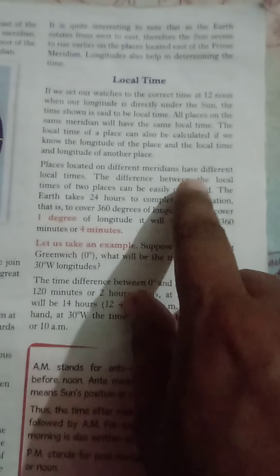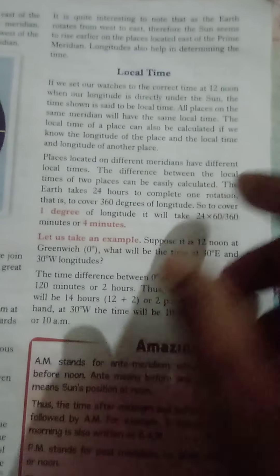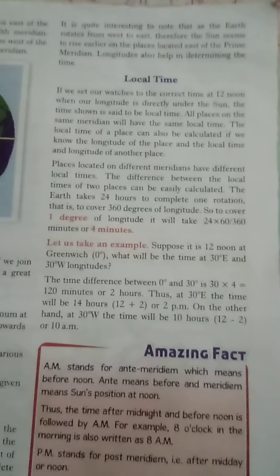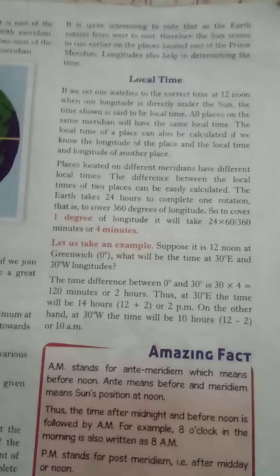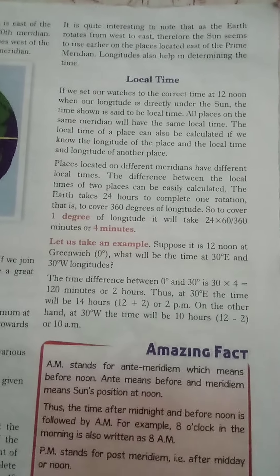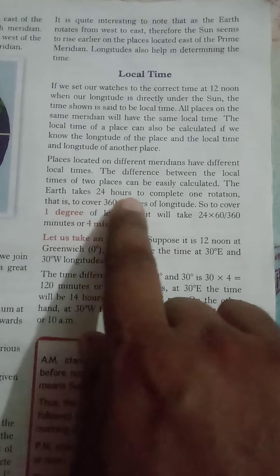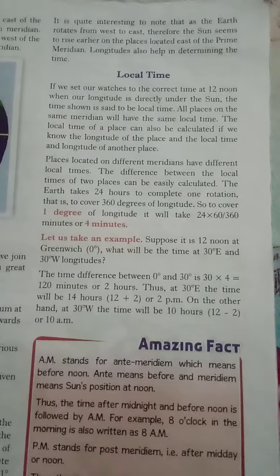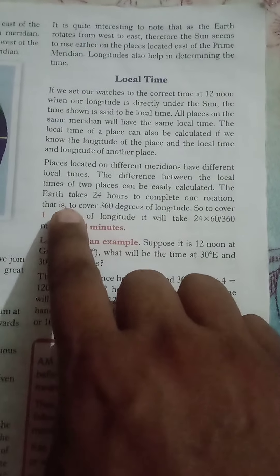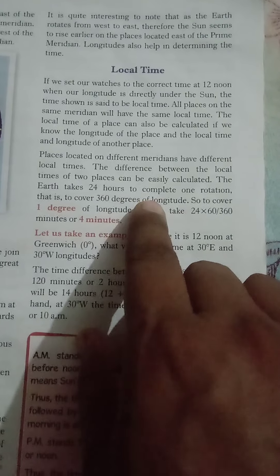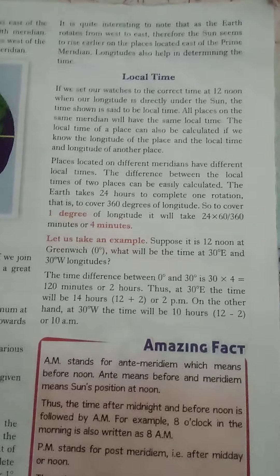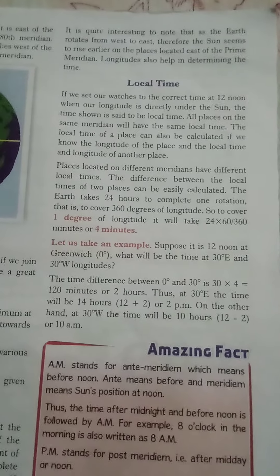The difference between the local time of two places can be easily calculated. The Earth takes 24 hours to complete one rotation on its axis — as you all know, the Earth completes one full rotation in 24 hours.